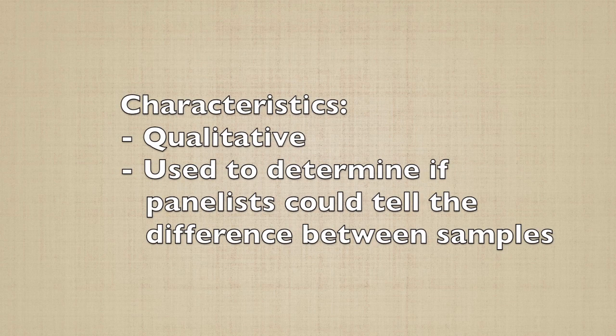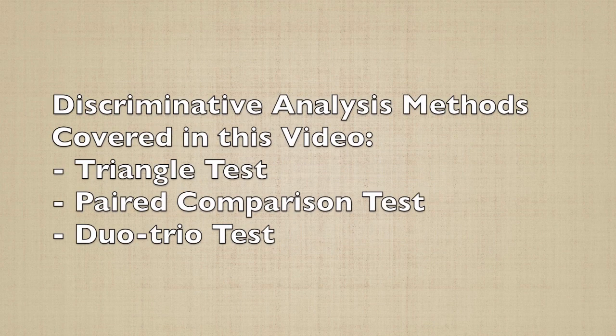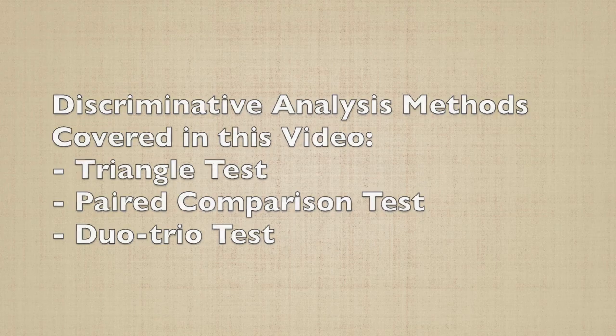Discriminative tests are qualitative and they are used to determine whether panelists are able to tell the difference between samples. For example, these tests are often used when performing quality control on a new batch of food to ensure that this batch has no sensory differences from the control. In this video, we will demonstrate the following discriminative sensory analyses: triangle test, pair comparison test, and dual trio test.